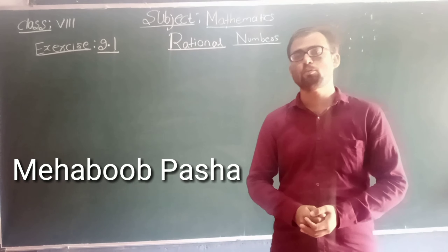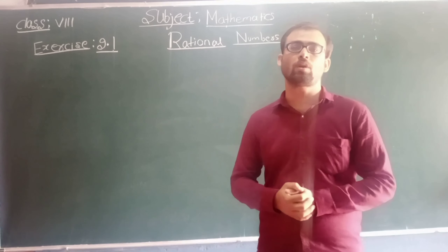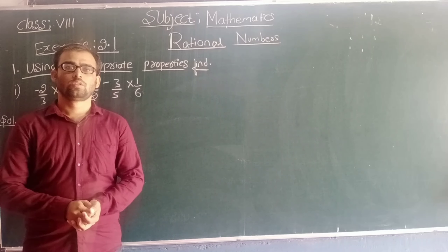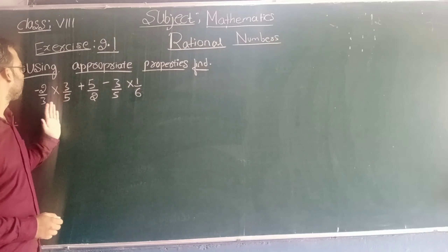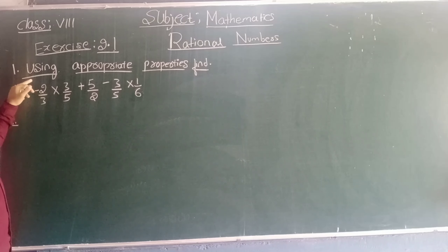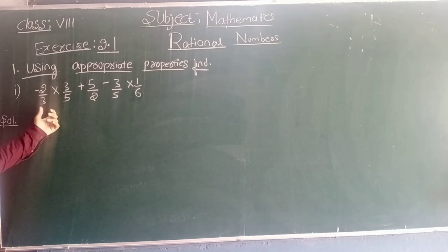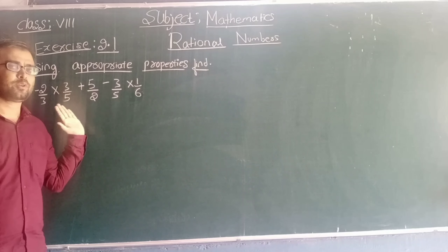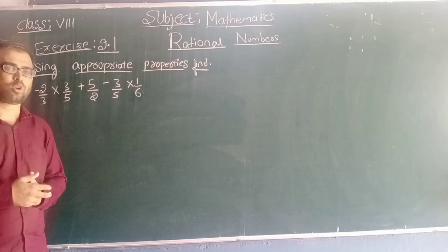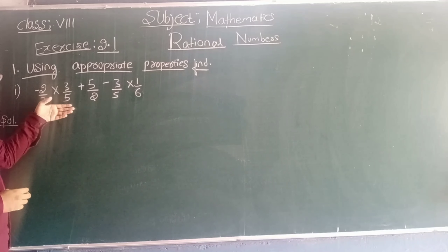Welcome students, I am Pasha and today in this session we will continue with the problems of Exercise 2.1 of rational numbers. Look at the first question. What is given here — using appropriate properties — we need to find the value of this expression using appropriate properties. So for the first step, we will take this as it is.